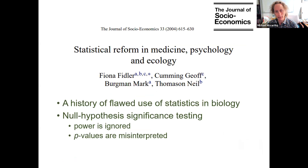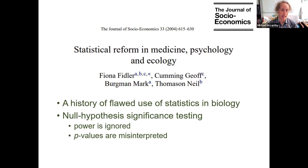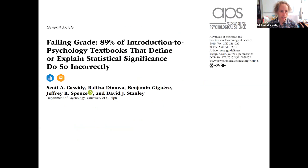I wasn't hopeful. There's a history of flawed use of statistics in biology, revolving mostly around null hypothesis significance testing where power is ignored and p-values are misinterpreted. A study of introductory psychology textbooks found that in approximately 90% of them, authors defined statistical significance incorrectly, presenting well-known fallacies as if they were true.